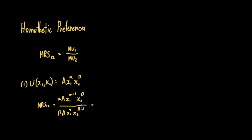When we simplify this, we can cancel out both A's, alpha gets cancelled out, the x sub 1 on the denominator gets cancelled out, the beta exponent on x sub 2 gets cancelled out, and x sub 2 on the numerator gets cancelled out. We are left with alpha times x sub 2 over beta times x sub 1. We can see that the marginal rate of substitution is dependent only on the ratio of x sub 1 and x sub 2, because alpha and beta are just constants.